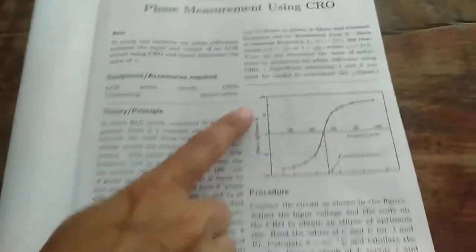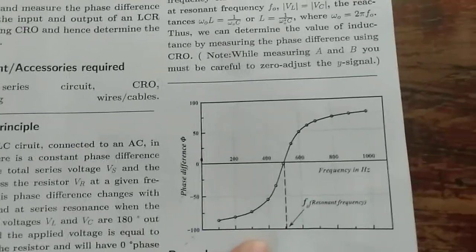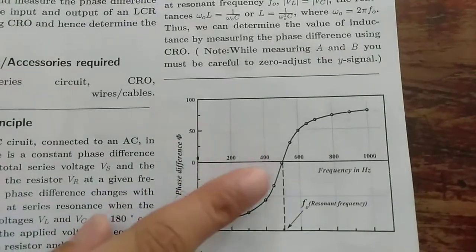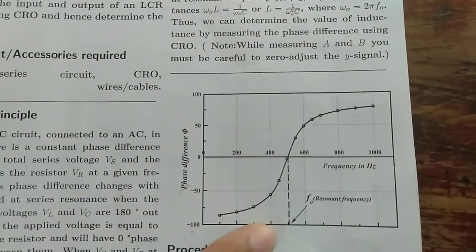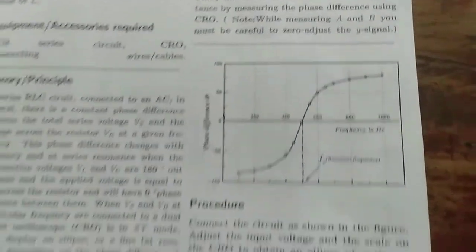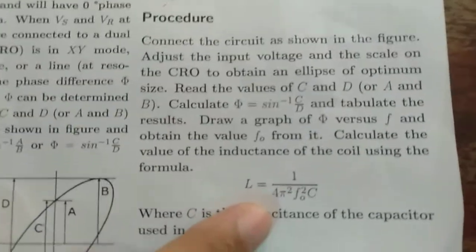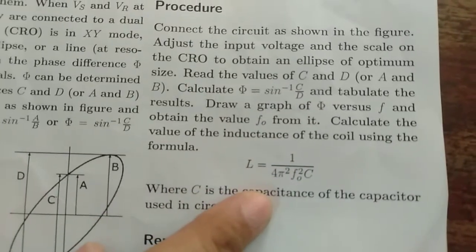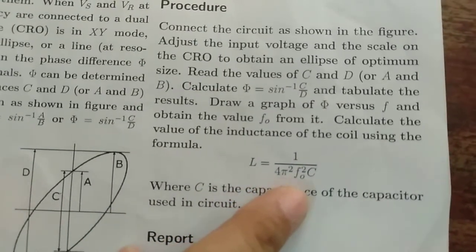The graph that you obtain when you plot frequency along X axis and phase difference along Y axis is this, and from the graph by knowing the resonant frequency, you can substitute the value for the inductance included in the circuit that is given by L is equal to 1 by 4 pi square into F0 square C.